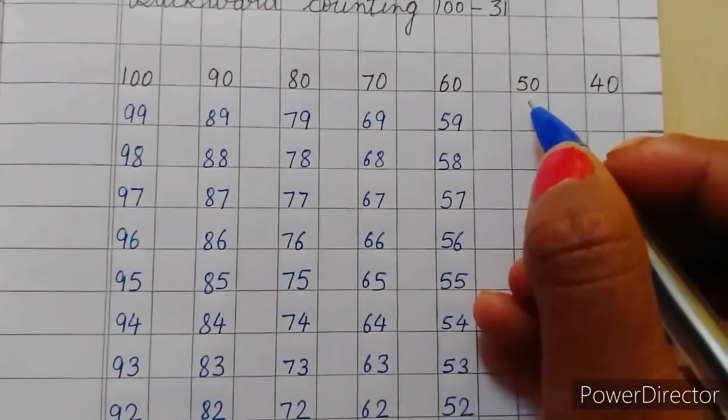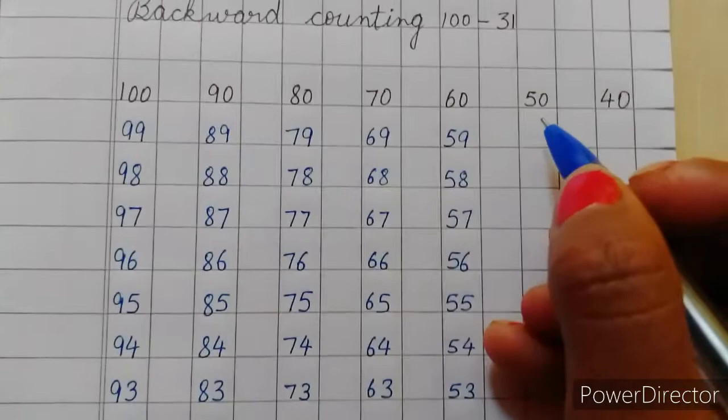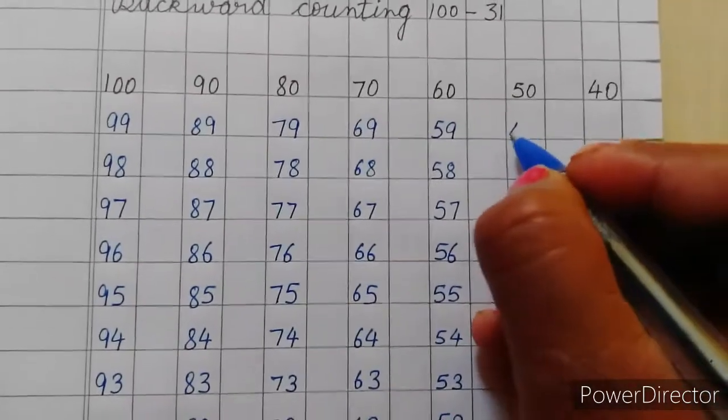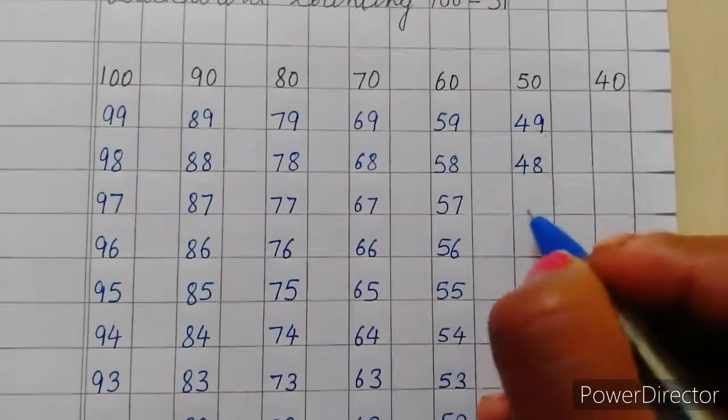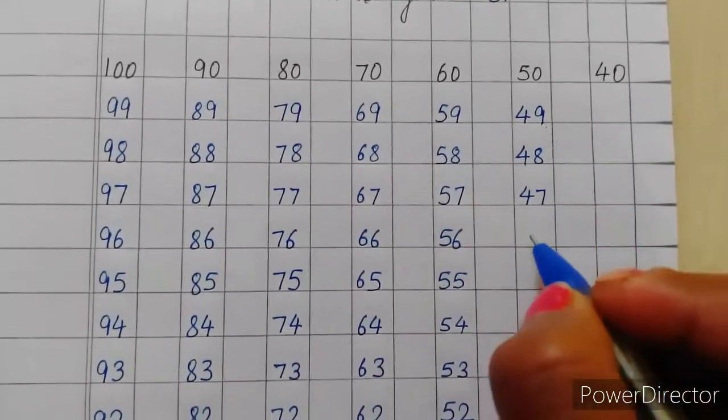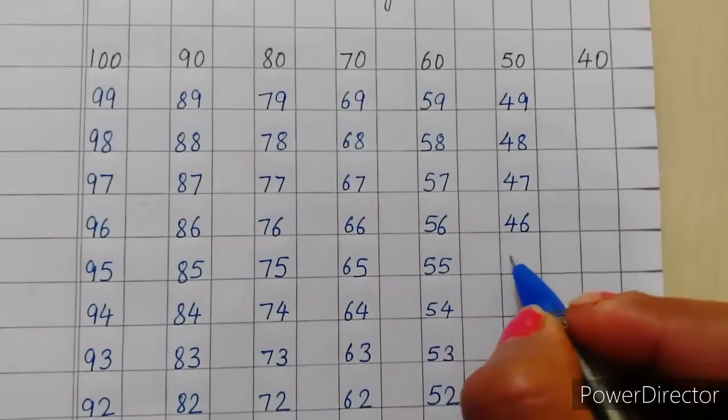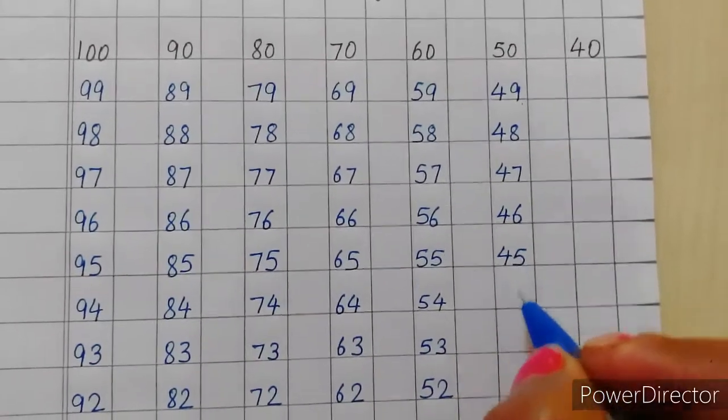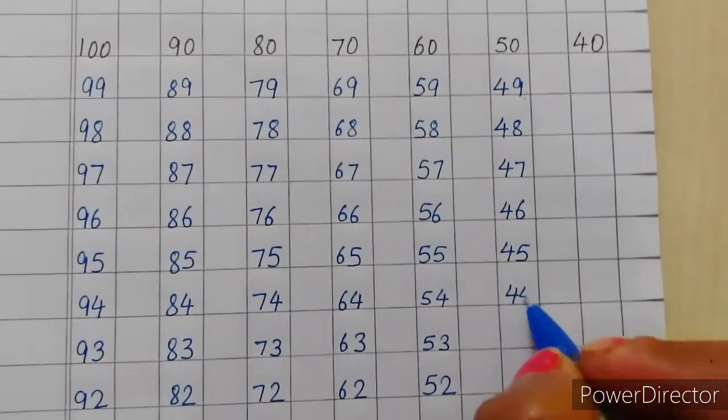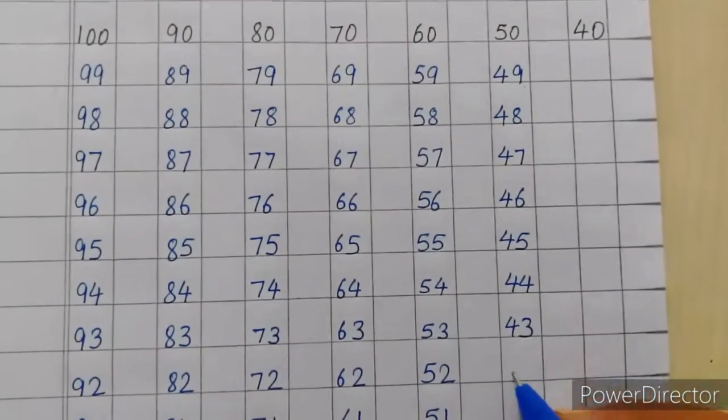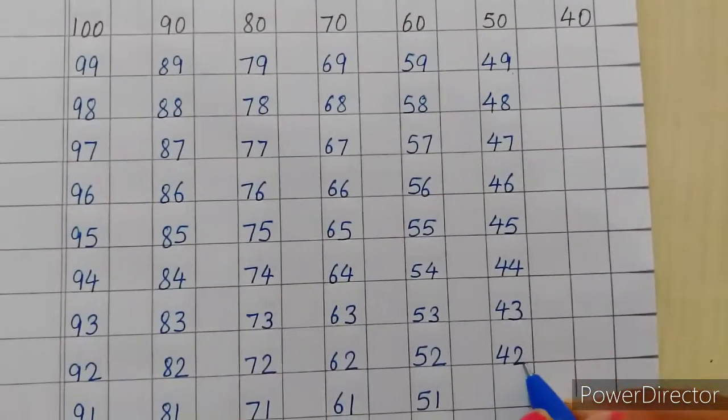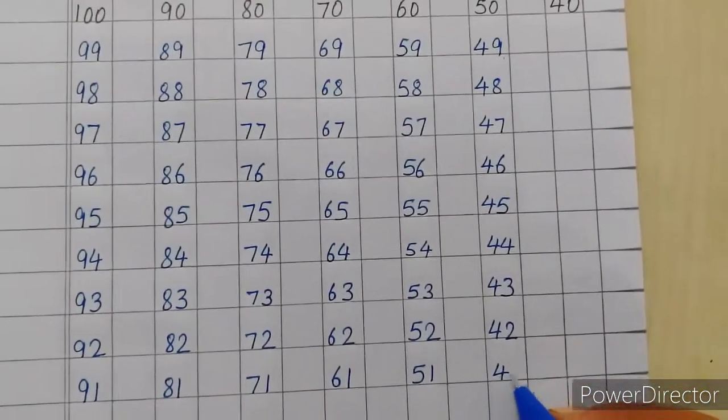Aur 5 se pehle kya aata hai? 1, 2, 3, 4, 5. 5 se pehle aata hai 4. 4, 9, 49, 48, 48, 47, 47, 46, 45, 45, 44, 44, 43, 43, 42, 42, 41.